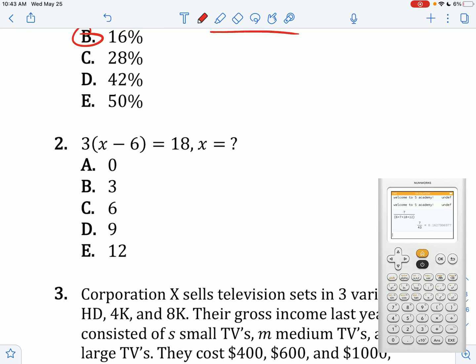This one: 3x minus 6 equals 18. If I divide both sides by 3, we get x minus 6 equals 18. Sorry, equals 6. x equals 12.